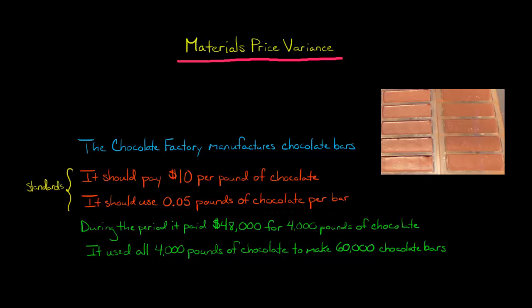Those are the standards that have been set by the company. In terms of the actual operating results for the period, the company paid $48,000 to acquire 4,000 pounds of chocolate. And then let's just say they used 100% of that chocolate, all 4,000 pounds, in order to make 60,000 chocolate bars.